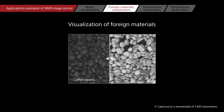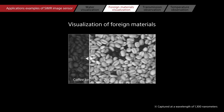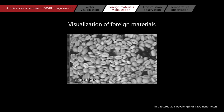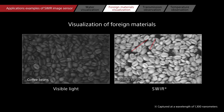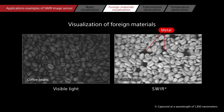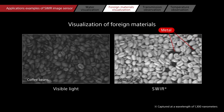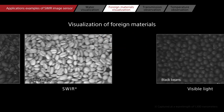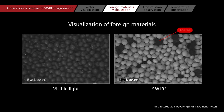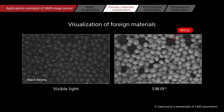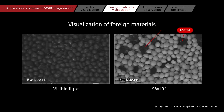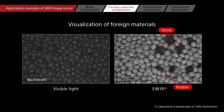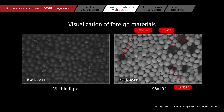Materials that look similar in visible light can be distinguished in SWIR images by differences in reflectivity. As a result, SWIR imaging is also used in applications such as inspecting products for foreign material.